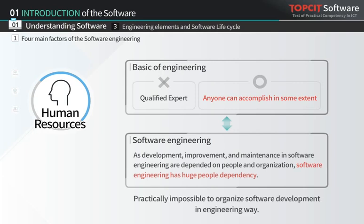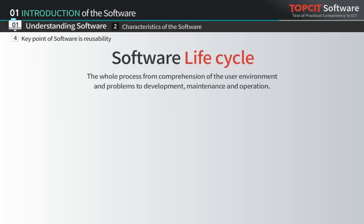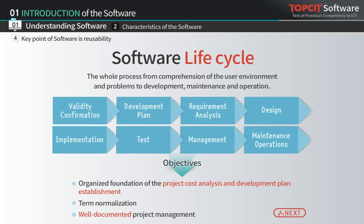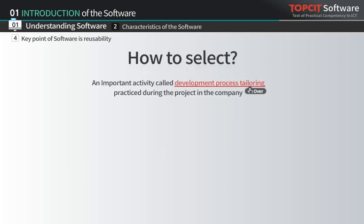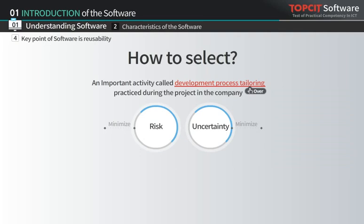Because there are a variety of issues in software engineering, please be aware that it is practically impossible to organize software development in a purely engineering way. Selecting a lifecycle is an important activity for development process tailoring during a project. The selection of lifecycle models is implemented with an understanding of the risk and uncertainty in system development.